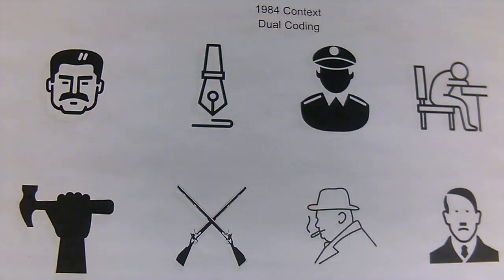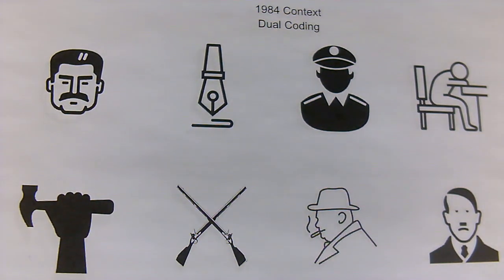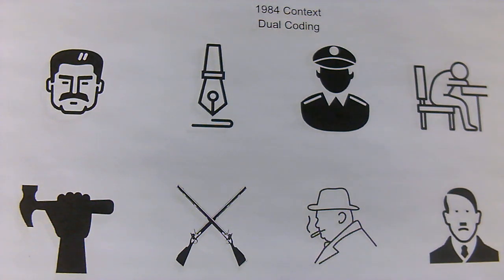We are going to run through eight key pieces of contextual information that will help you in your exam. This is for OCR A Level English Literature, Paper 2, Section B, the Comparative Paper, and we do 1984 with The Handmaid's Tale. We'll do 1984 today, and then we'll do The Handmaid's Tale in another lesson.